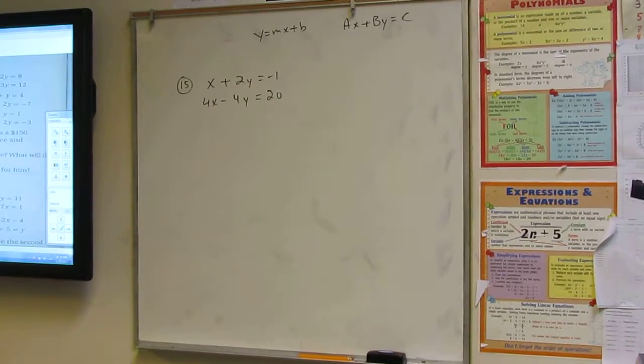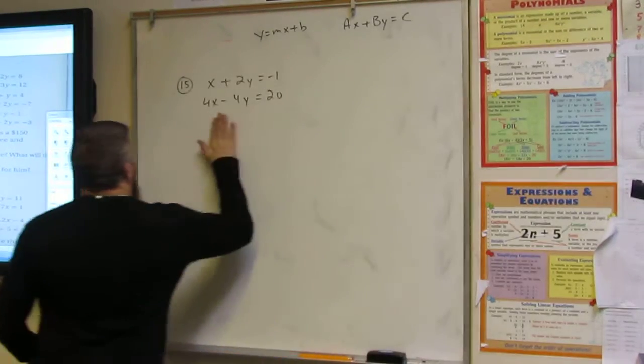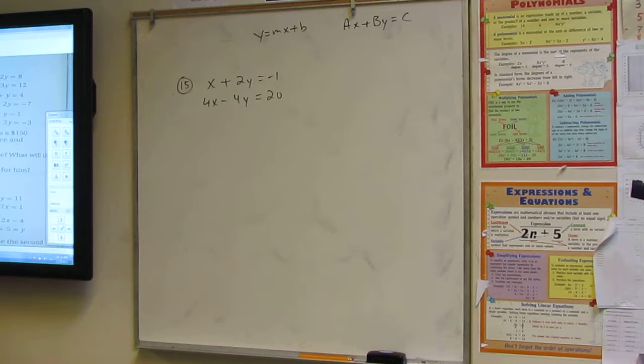Let's do it. All right, here we go. Fifteen, what do I do? Divide the top one, or multiply everything on the top by two. By two, good, I like it.